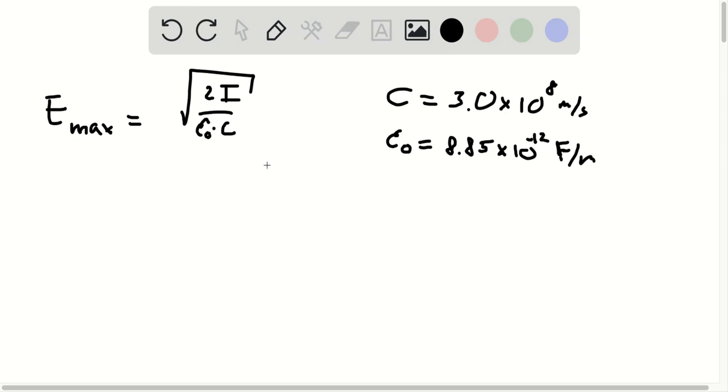So what else can you tell about this wave? Well, you can actually calculate what this value is that you're given, because everything is plugged in for you. Then you find that the maximum electric field is 2.2 times 10 to the 4 newtons per coulomb. This is the maximum electric field of the electromagnetic wave.